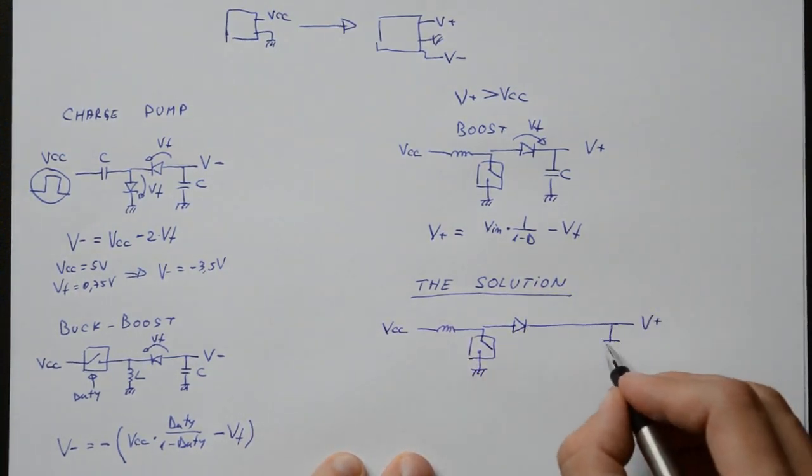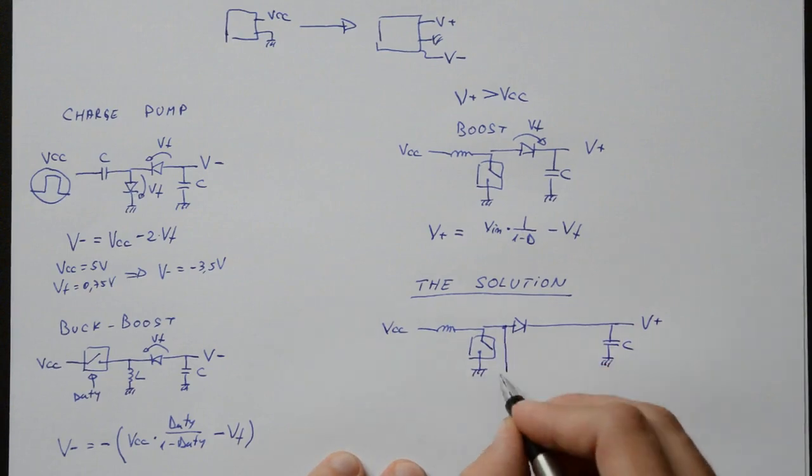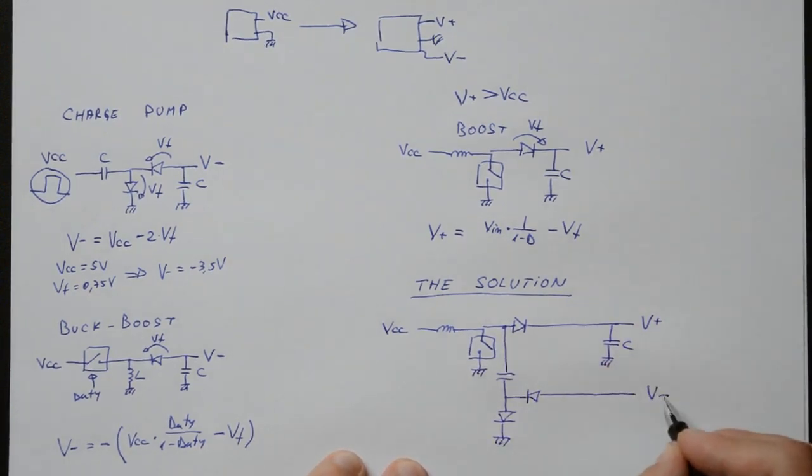On the positive rail, it works just like a normal boost circuit. And on the negative rail, it's a charge pump that uses the same reference voltage as the positive rail. So, in theory at least, both rails will have exactly the same voltage.